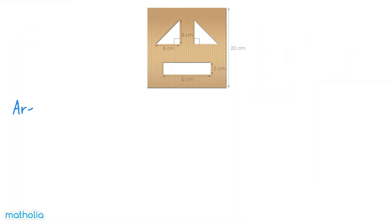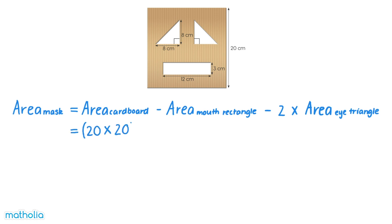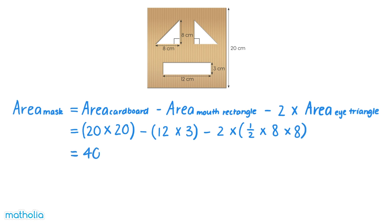The total area of Ethan's mask will be the area of the cardboard minus the area of the mouth rectangle and the two eye triangles. Let's find the areas of each shape and subtract. This leaves us with 20 times 20 minus 12 times 3 minus 2 times one-half times 8 times 8. We simplify this to 400 minus 36 minus 64, which equals 300.